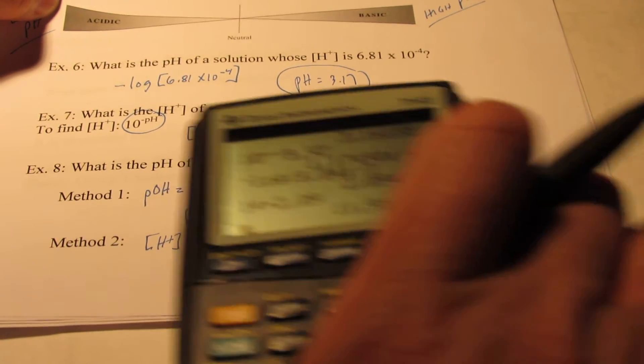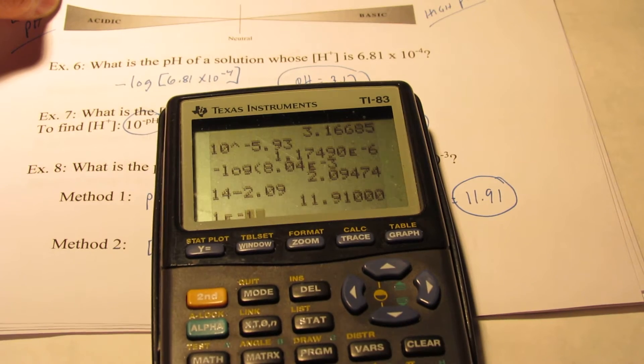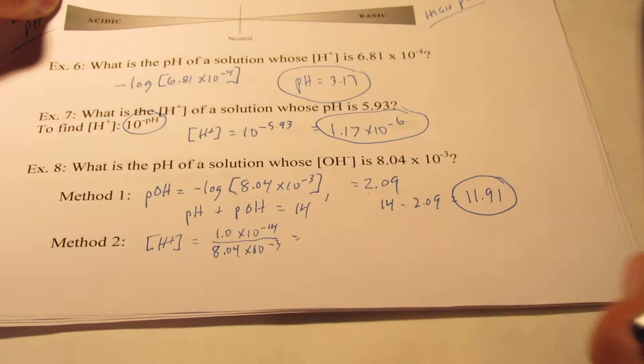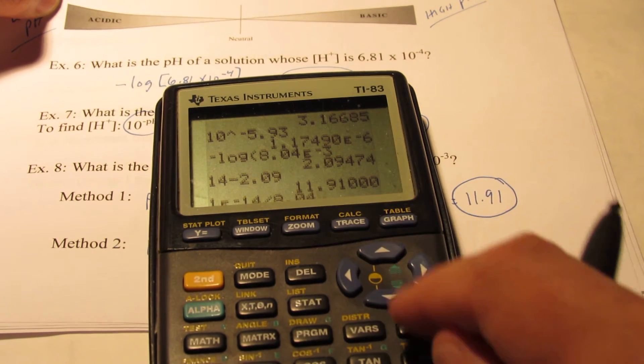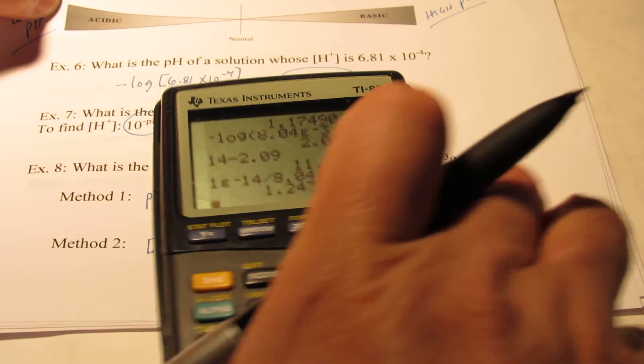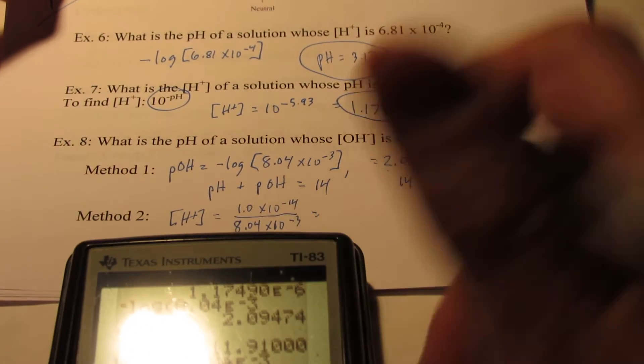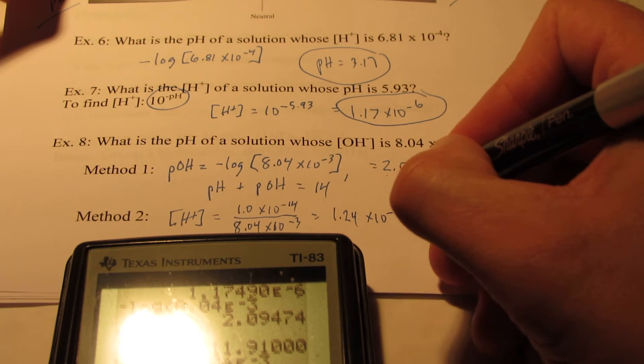So when I do that, let's see what we get here. 1 second EE negative 14 divided by 8.04 second EE negative 3rd. We'll enter that and we get 1.24 times 10 to the negative 12th.